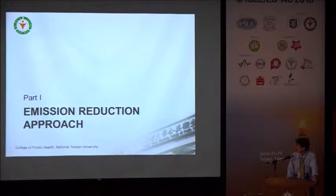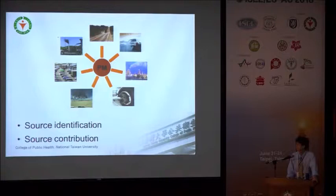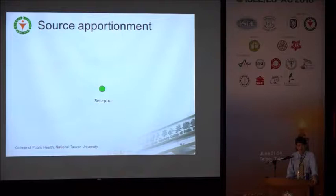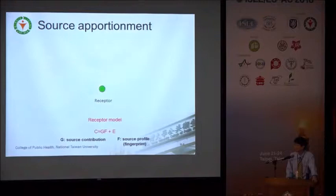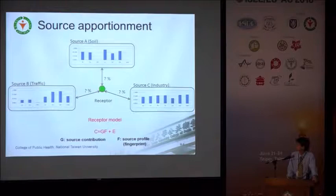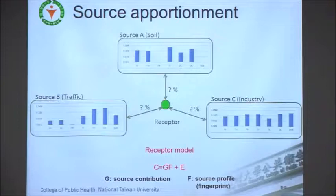For the emission reduction approach, there are many sources — for example, for PM2.5, from traffic, from industries, from transboundary transportation. Usually we measure PM2.5 concentration levels at the receptor site. With 10 samples, we can measure the PM2.5 mass concentrations. If we measure the chemical species further, we can apply receptor models to decompose the chemical concentration data into two metrics: one is the profile — that's the fingerprint — with examples for soil, traffic, and industries. Based on this profile, we can identify the sources and mathematically calculate the gain matrix, that's the contribution, to estimate source contributions.